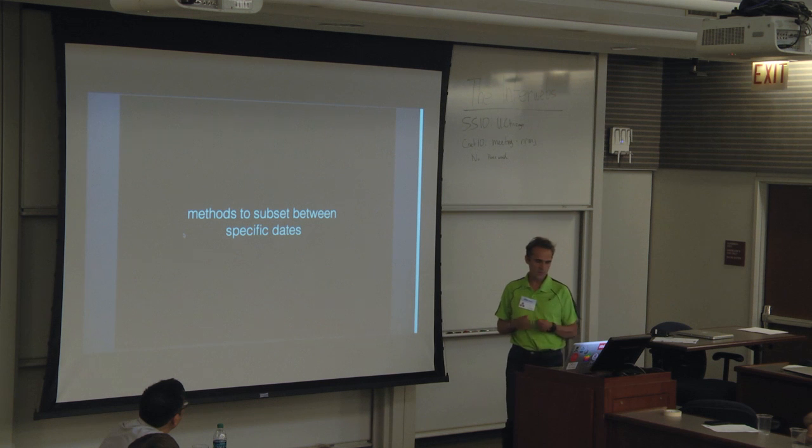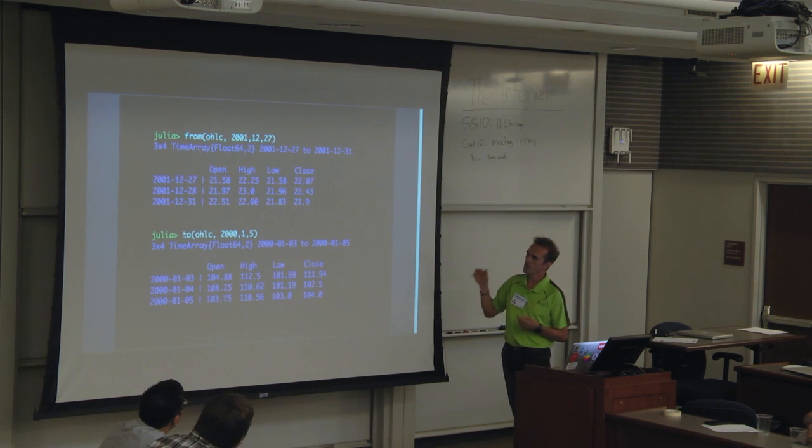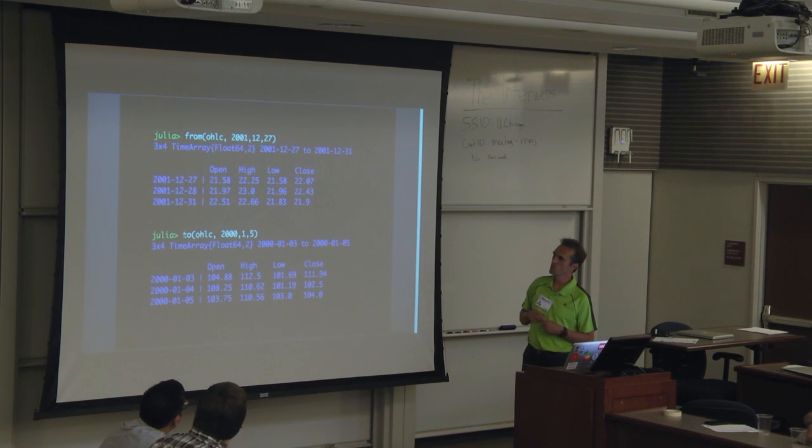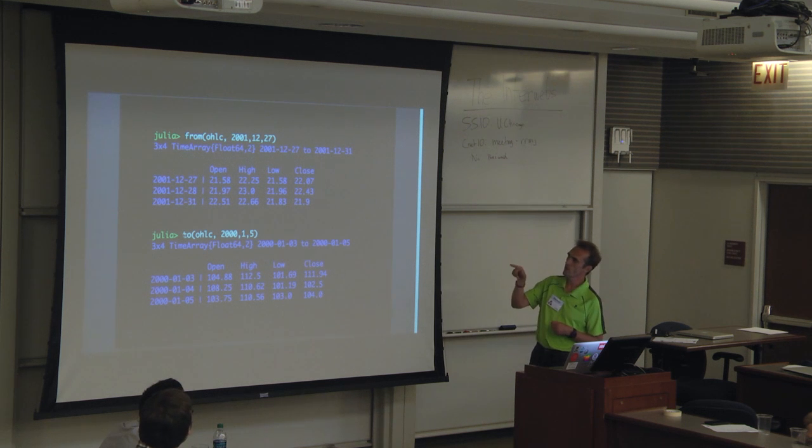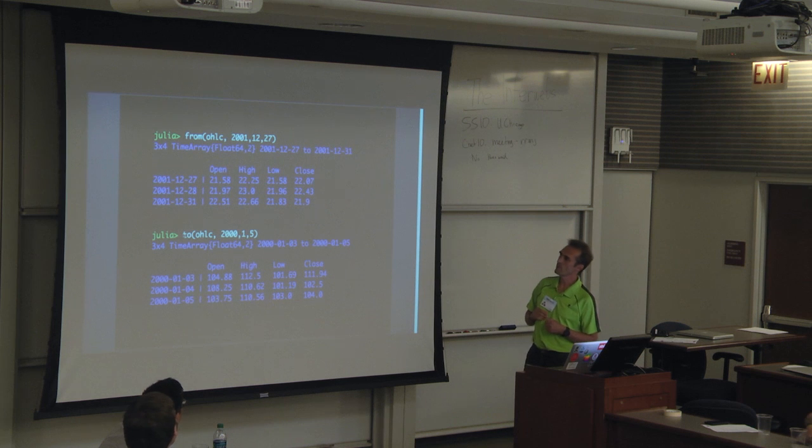There's other methods that you can use to subset between specific dates. From is kind of like a tail in R. It's from the date to the end of the data set. And to is from the beginning of the data set to the value that you'd be passing this way. And you can see that's just positional arguments. 2000, 1, 5 is obviously 2000-01-05.